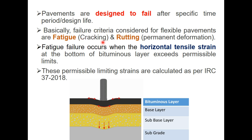Fatigue is because of cracking and rutting is because of permanent deformation. When a wheel load is applied on the pavement surface, it will cause tensile strain at the bottom of the bituminous layer. Fatigue failure occurs when this horizontal tensile strain at the bottom of the bituminous layer exceeds permissible limits, which are calculated as per IRC 37 2018.